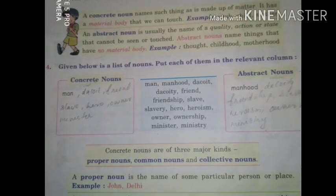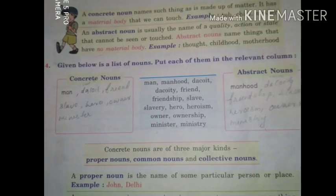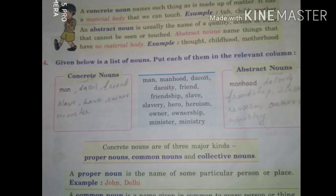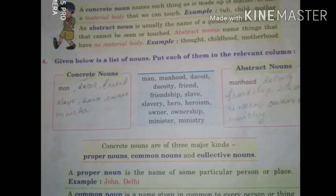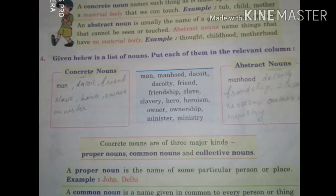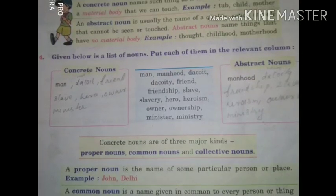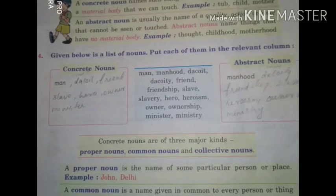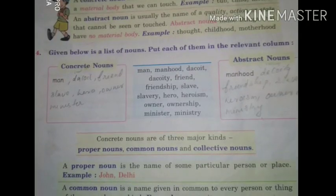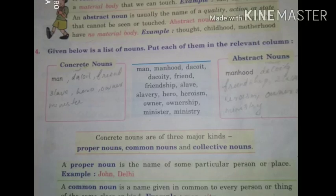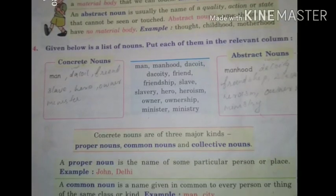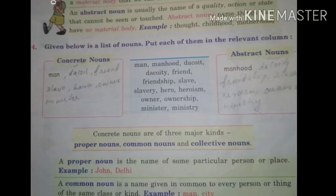Given below is a list of nouns. Put each of them into two columns — abstract nouns and concrete nouns. Concrete nouns are things we can touch and experience; abstract nouns we cannot touch. The word pairs are: man/manhood, dacoit/dacoity, friend/friendship, slave/slavery, hero/heroism, owner/ownership, minister/ministry.